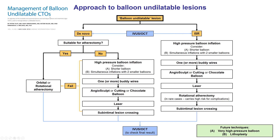Additional options include buddy wires, angiosculpt cutting balloons, chocolate balloons, laser — potentially with contrast — and if everything does not work, rotational atherectomy as a last resort. Another option is sub-intimal lesion crossing and crushing from the outside. In any scenario, it is very important to do intravascular imaging. In this case, we would not have known the patient had stent underexpansion had we not done intravascular ultrasound.